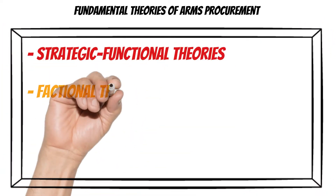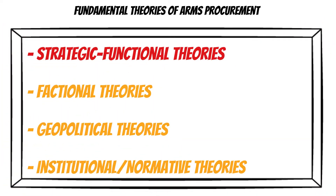I separated this out into four blocks because this is probably the most simplistic way that I can explain the arms procurement behavior of states. The first one we're going over today is the strategic functional theories. The second is the factional theory of arms procurement behavior. The third is the geopolitical explanations or theories explaining why states procure arms. And the last one, which is probably my favorite, is the institutional or normative theory of arms procurement behavior.